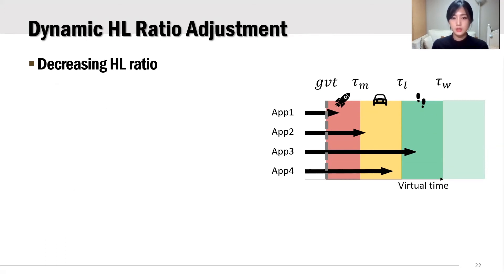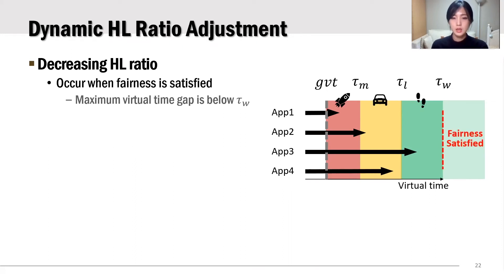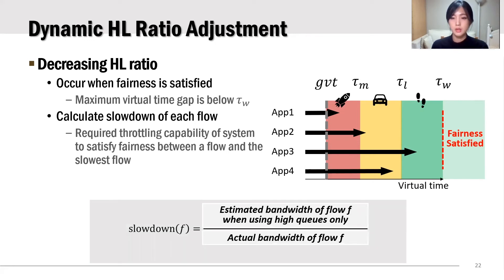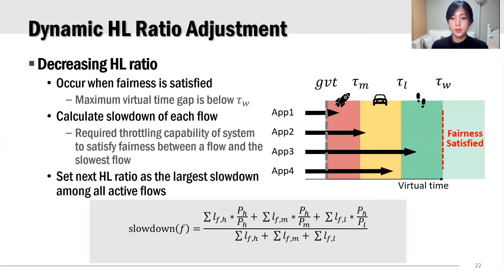To prevent unnecessarily high tail latency, G2FQ tries to decrease the HL ratio when fairness is satisfied. In this case, G2FQ calculates the virtual slowdown of each flow, which represents the required throttling capability of the system for a flow to satisfy fairness. The virtual slowdown is calculated by dividing the estimated bandwidth of a flow without any throttling — using the high queue only — by the actual bandwidth of a flow. Then the next HL ratio becomes the maximum of the virtual slowdown among all active flows.